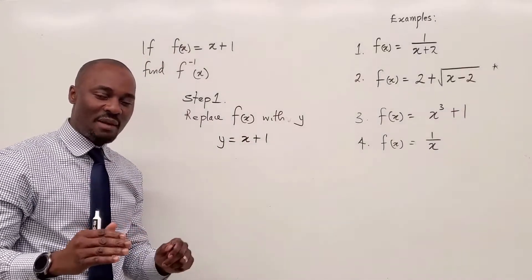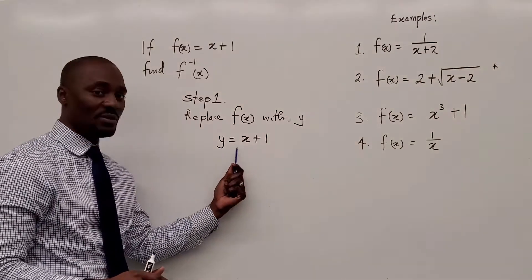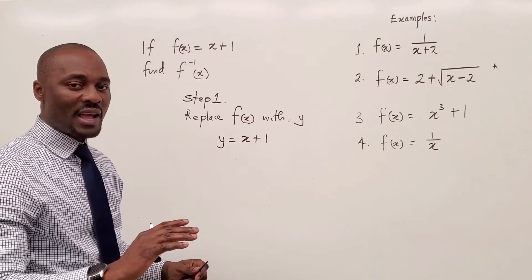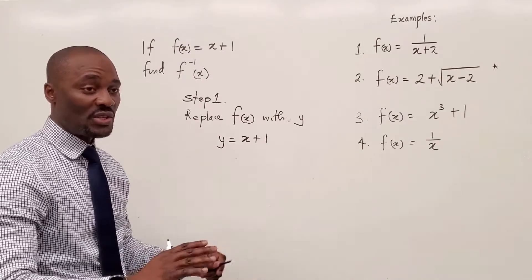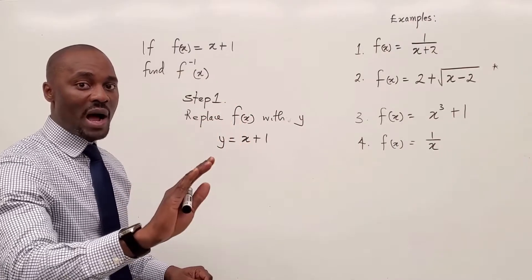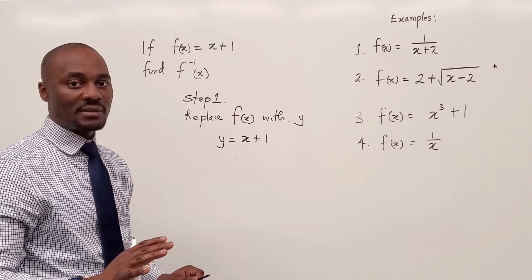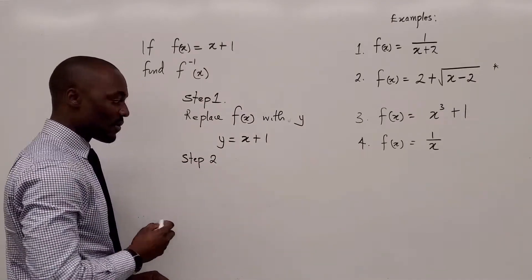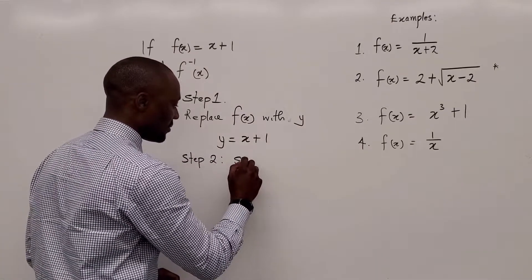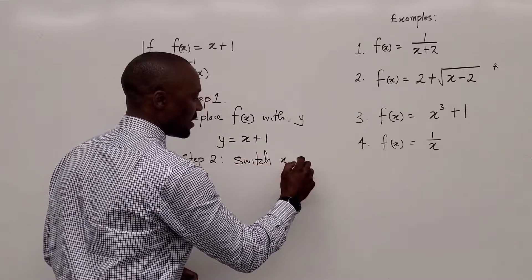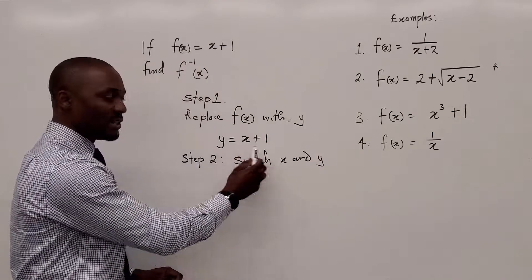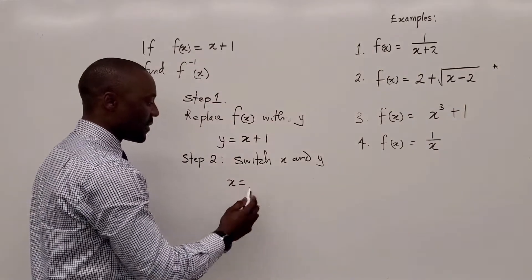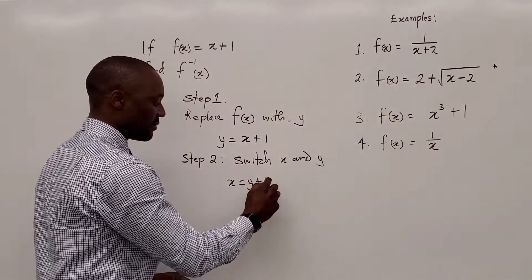Now the second step is very important. As soon as you replace it with y, the next thing is you switch x and y. I'm not saying move them — I'm saying just switch. Anywhere you see x, write y. Anywhere you see y, write x. That's the second step: switch x and y. So if I do my switch right now, instead of writing y here, I'm going to write x, and instead of writing x, I'm going to write y.